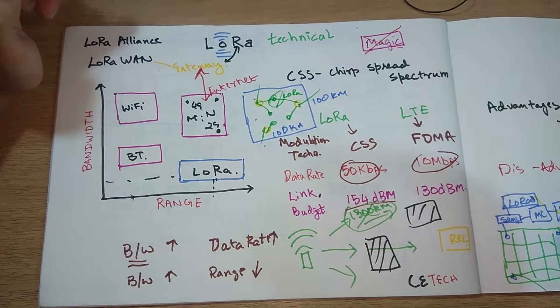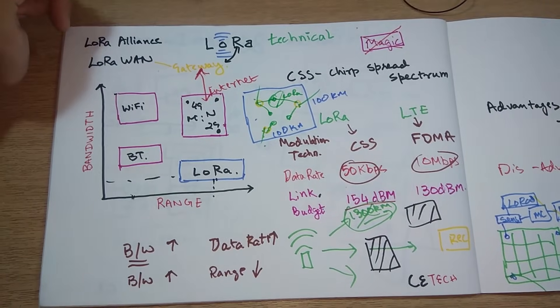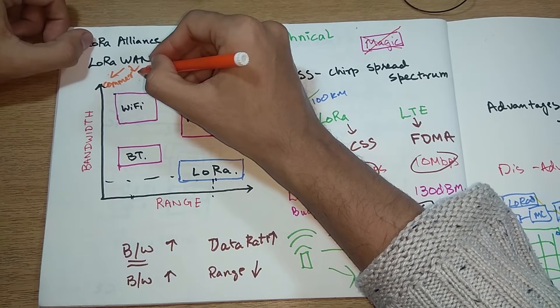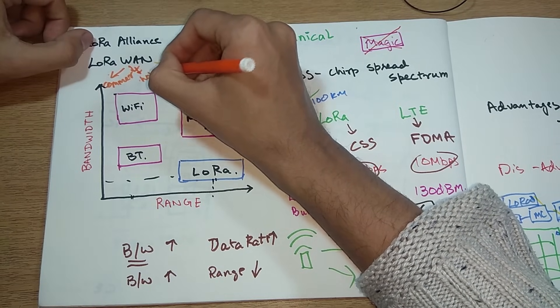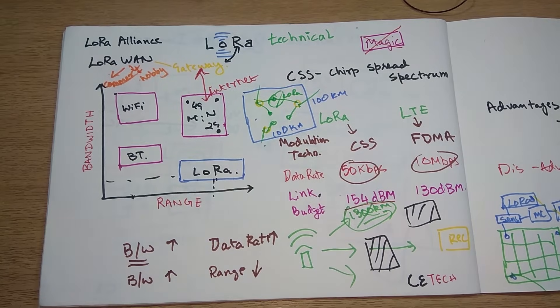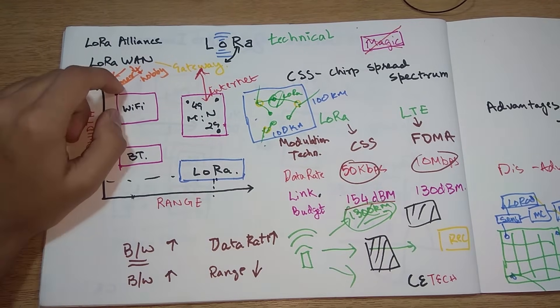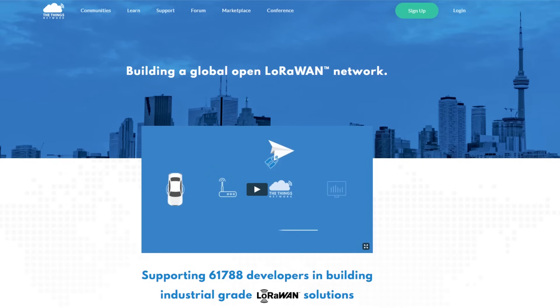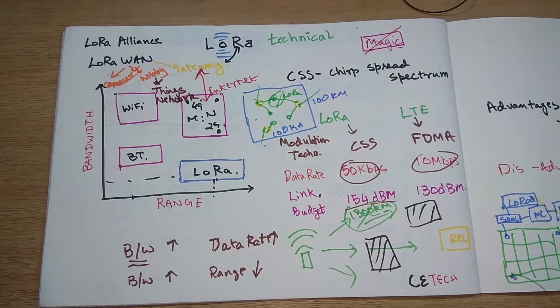These will connect to the internet and all the data from the sensors will be directly uploaded to the internet. Now these LoRaWAN gateways can be applied two types: commercially and hobby style. Commercially companies use this to run their products, to transfer data to their products.